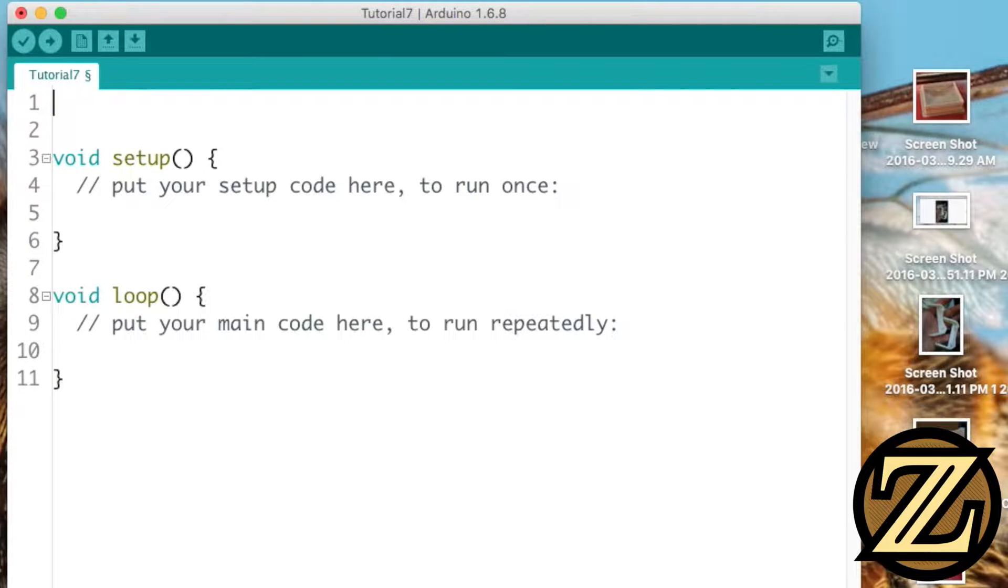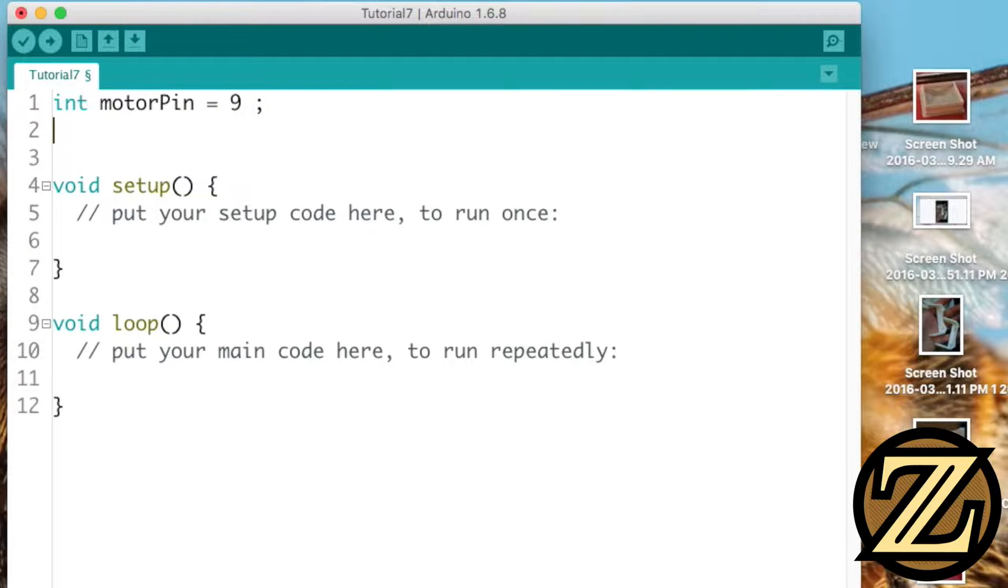The first thing we're going to want to do is initialize two integer variables. The first will be called motor pin and it will be equal to 9. The second will be called intensity and it will be equal to zero.